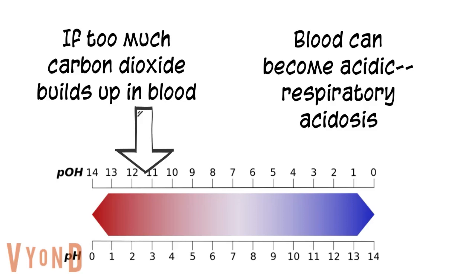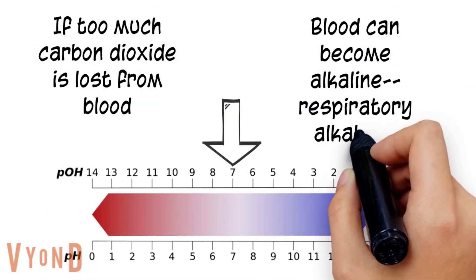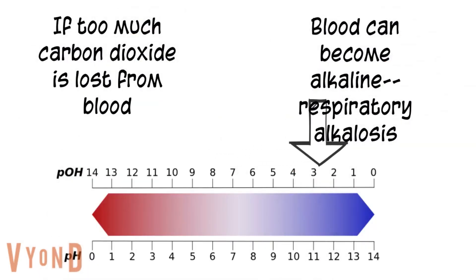You can induce a slight state of respiratory acidosis by holding your breath. Likewise, if too much carbon dioxide leaves the lungs, the hydrogen ion concentration decreases in the blood, causing it to become alkaline. This condition is called respiratory alkalosis. You can induce a state of respiratory alkalosis by hyperventilating.